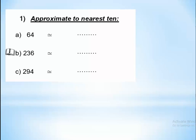Let's see the first example: approximate to the nearest ten. The steps are: underline the tens place, then circle the next-door digit. Ask yourself: is it 4 or less? Yes — it's 4. So let the underlined digit rest. Keep 6 as it is, and replace the next-door digits with zero. So the nearest ten is 60.